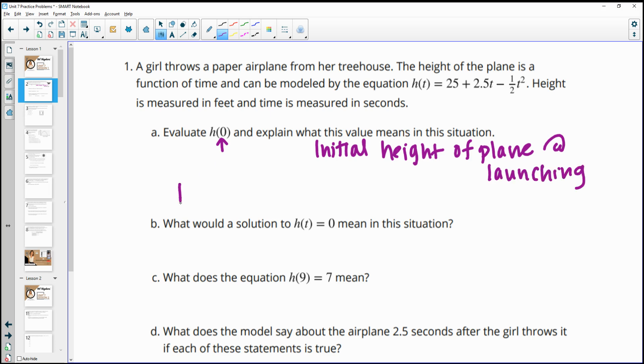And then when we go to figure out h of zero, we'll just plug t equals zero into our equations. We'd have 25 plus 2.5 times zero minus one half zero squared.